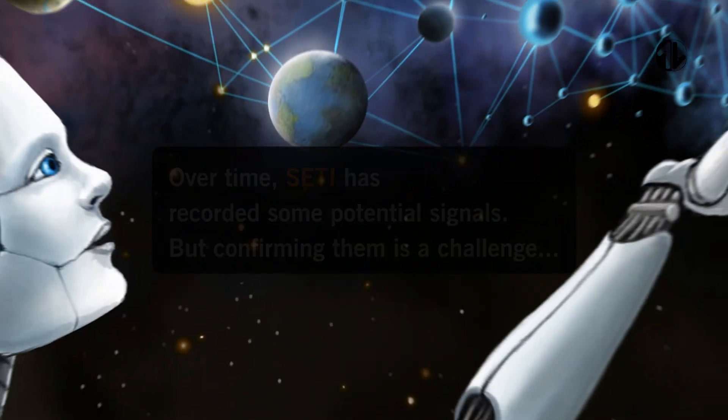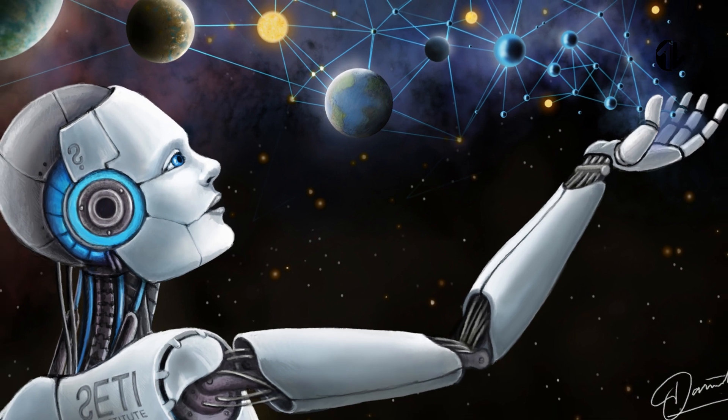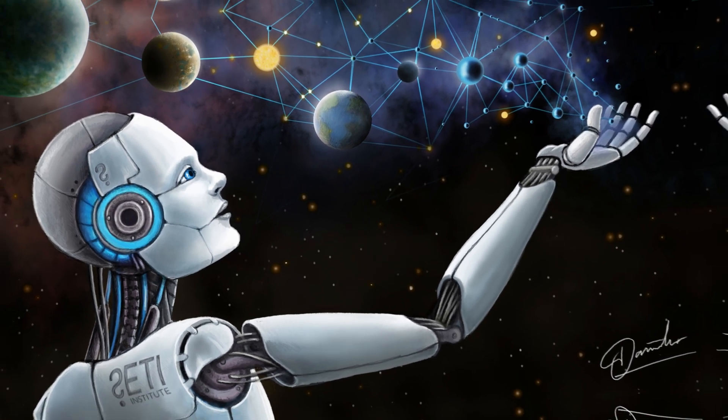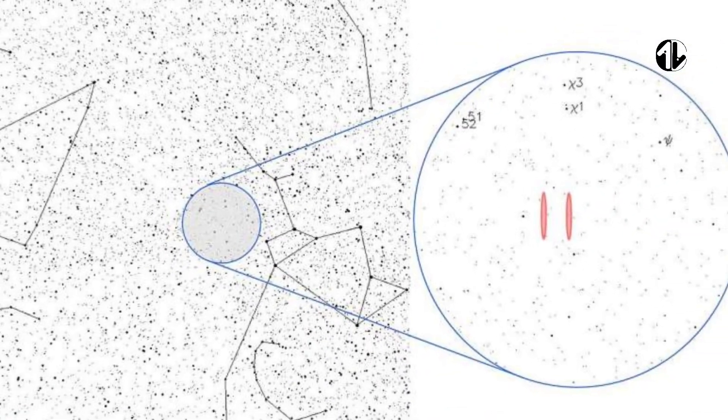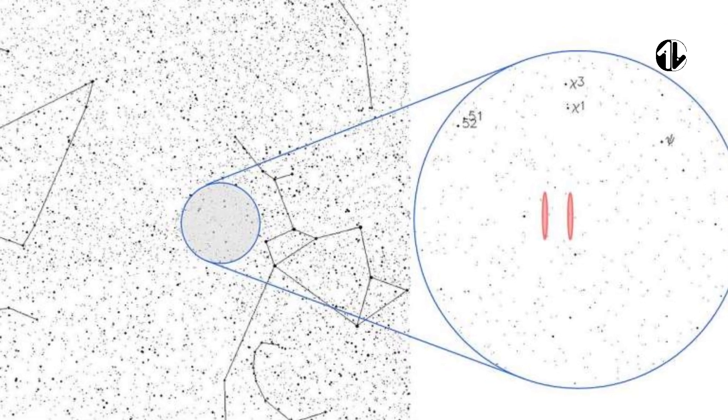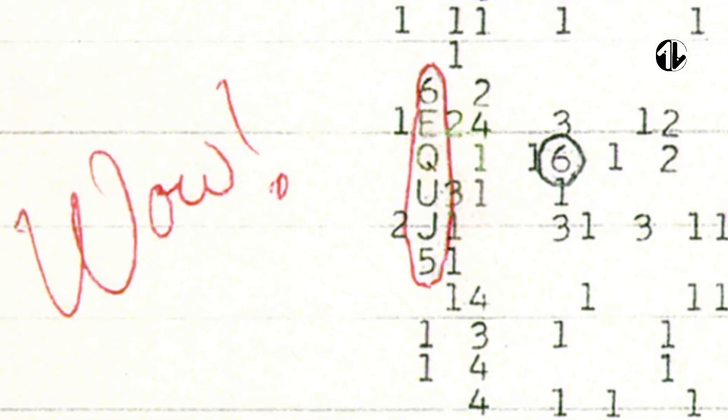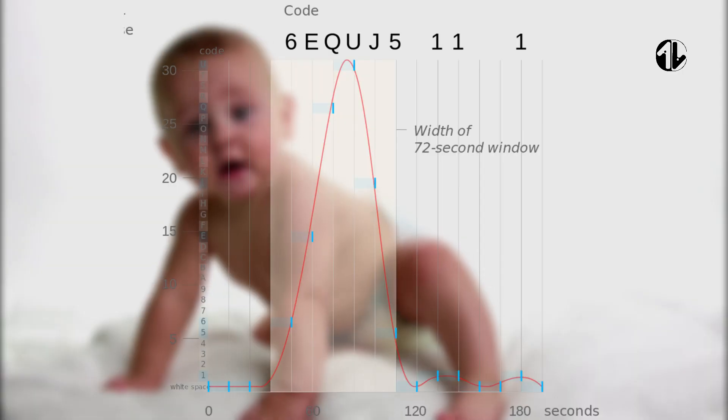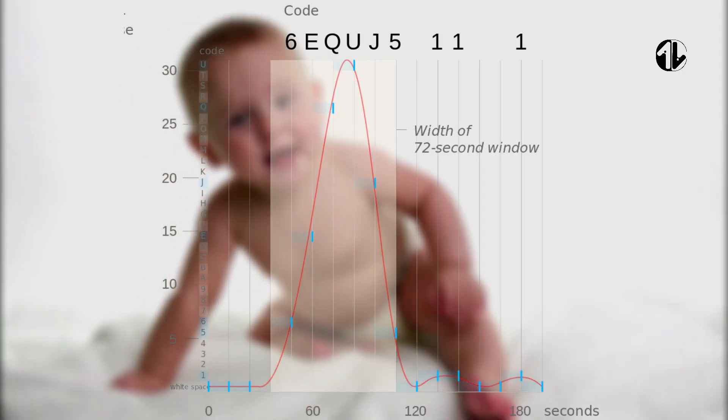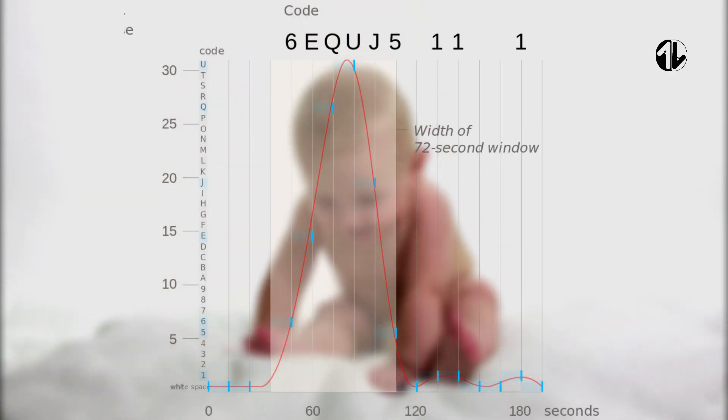Over time, SETI has recorded some promising signals and potential signs related to extraterrestrial life. One of the most famous signals was the Wow! signal, a strong and clear sign received in 1977. However, its source remains unclear to this day, but it has become a symbol of the possibility of discovering extraterrestrial life.